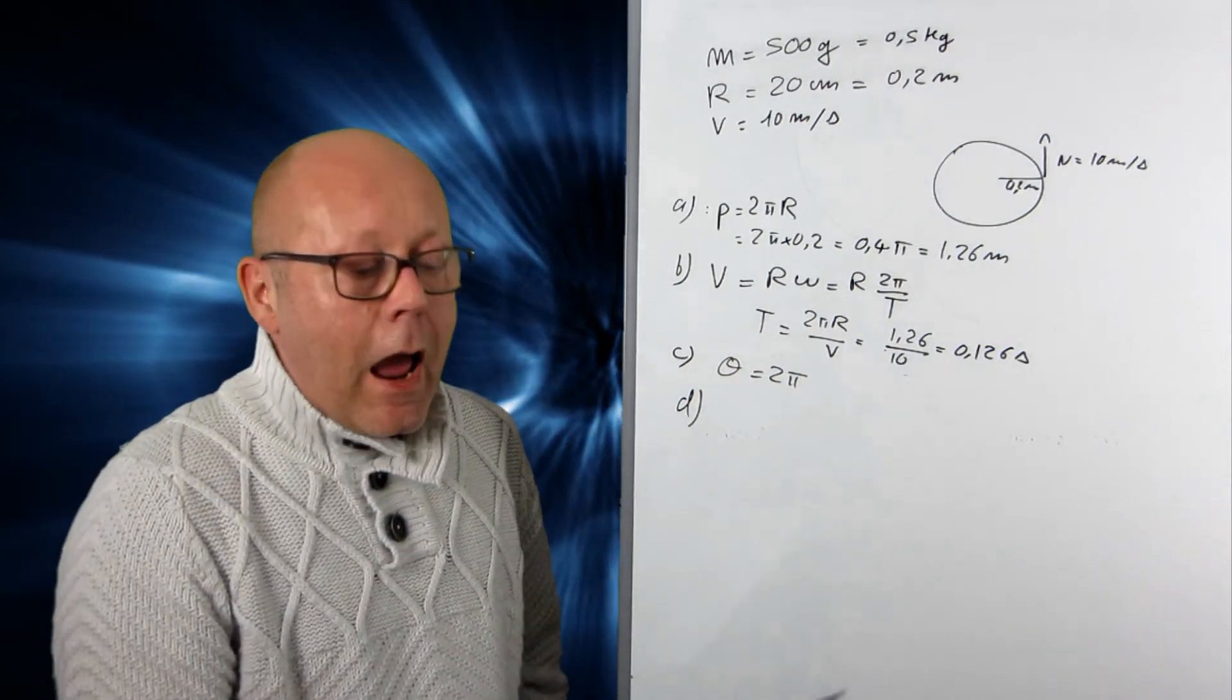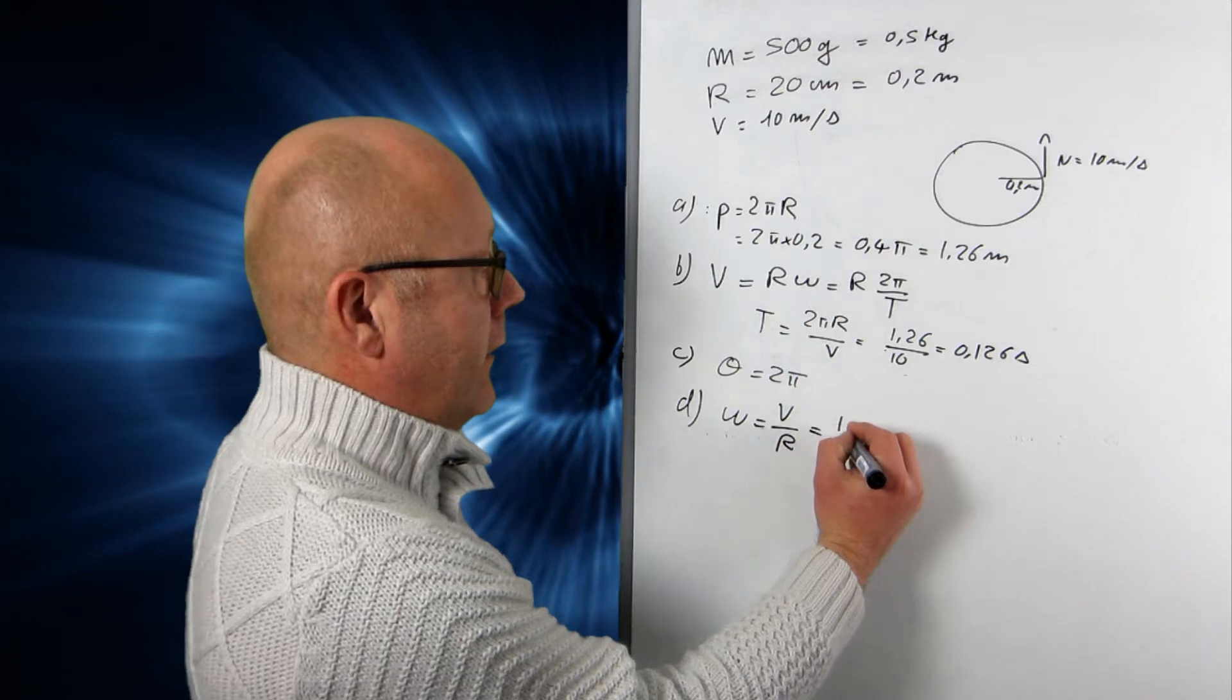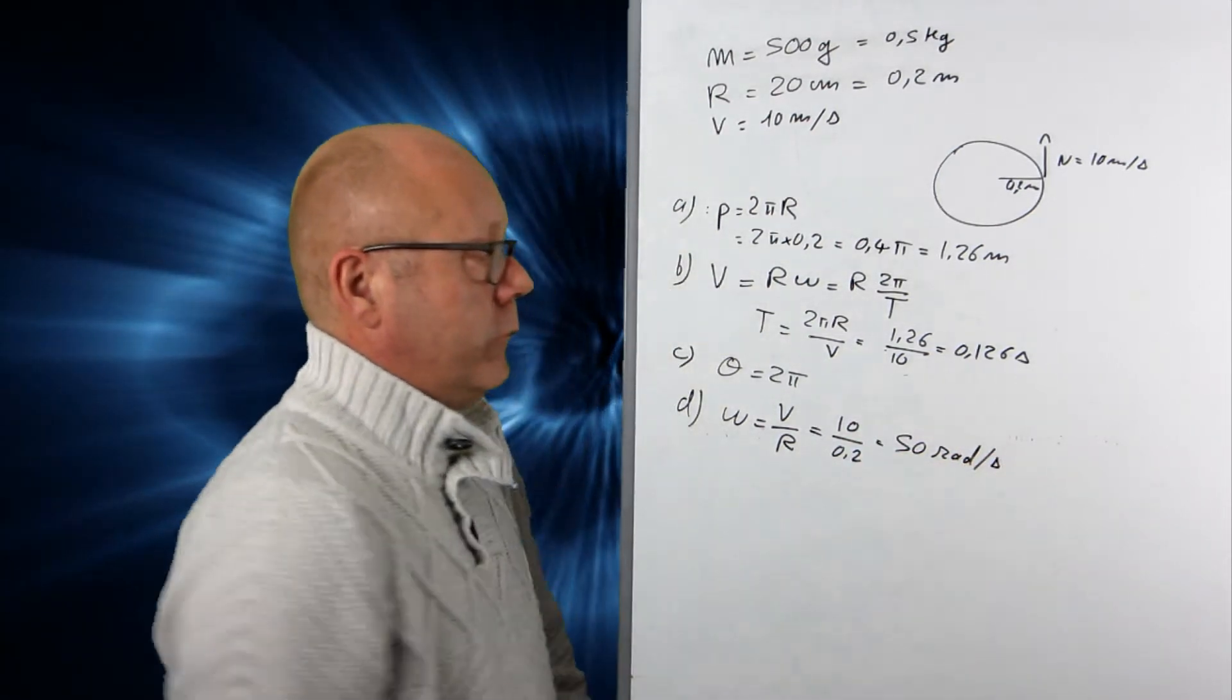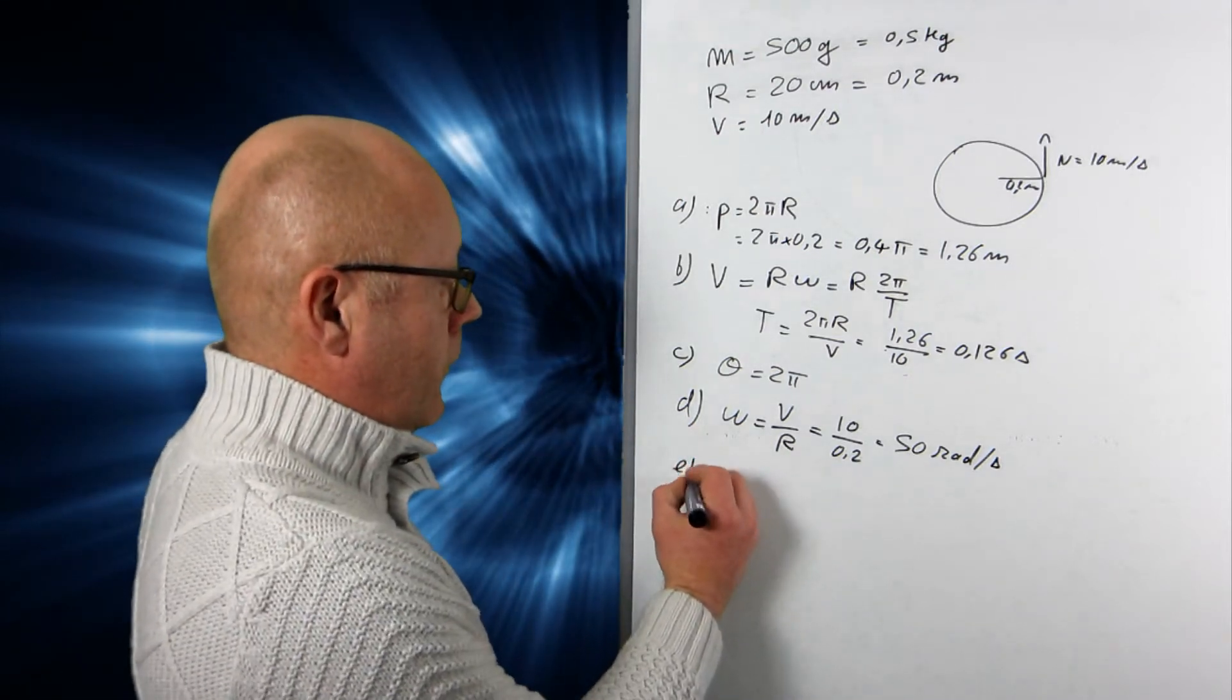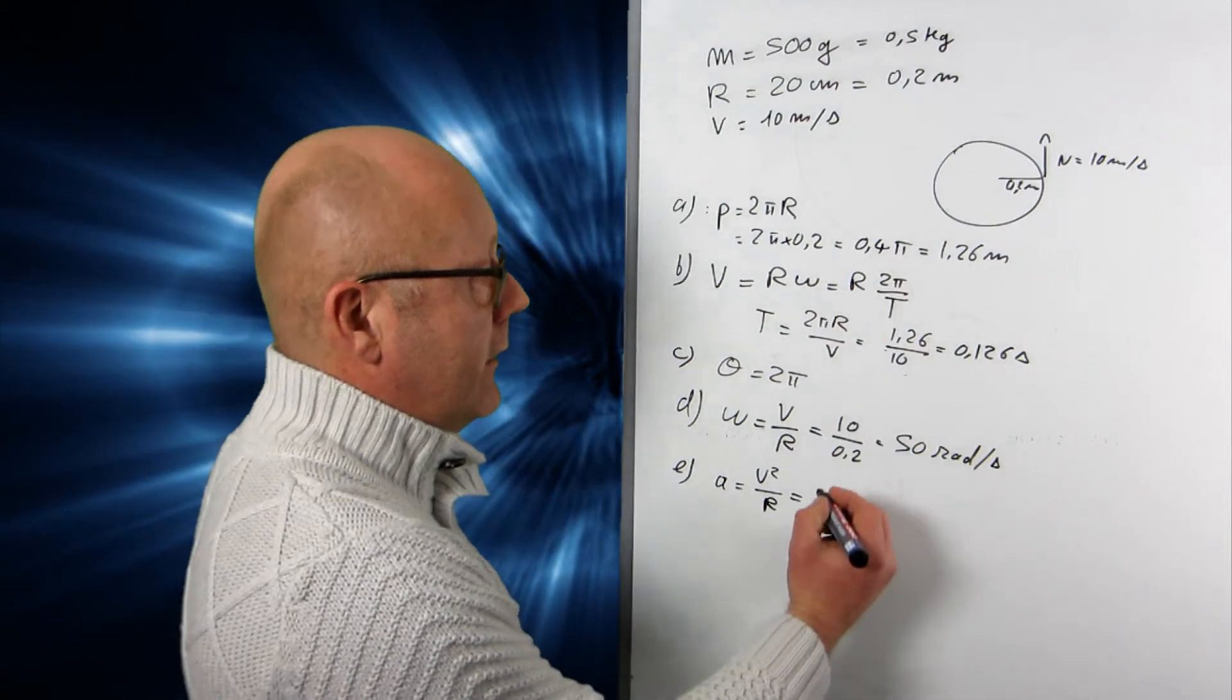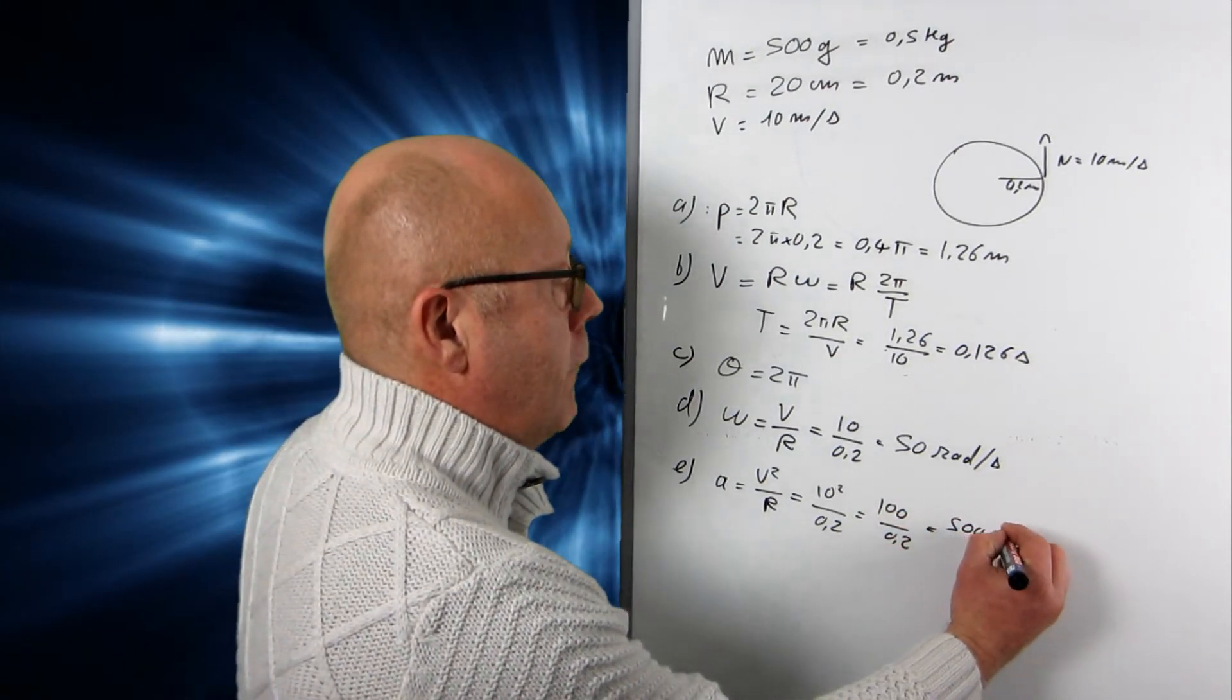Question D. The angular velocity. Well, it's given by v equals r omega. Omega equals v on r. So I'll just put 10 divided by the radius, which is 0.2, giving me 50 radians per second. E. The centripetal acceleration. In a circular motion, the acceleration on the body will be v square on r. So just plug in the numbers. 10 square divided by 0.2. So 100 divided by 0.2 gives me 500 meters per second square.